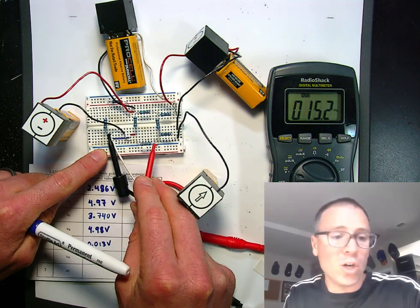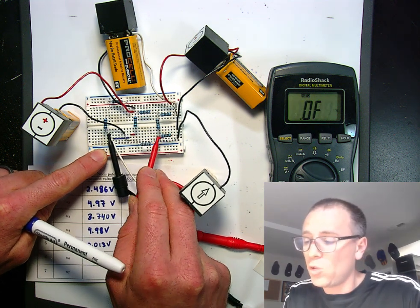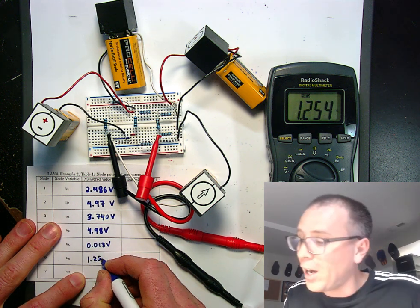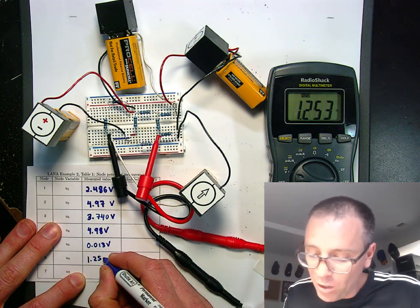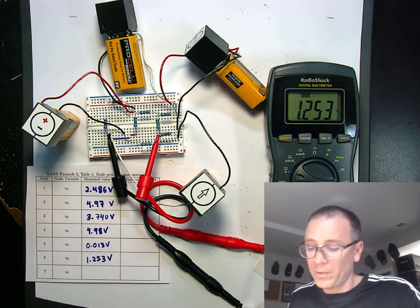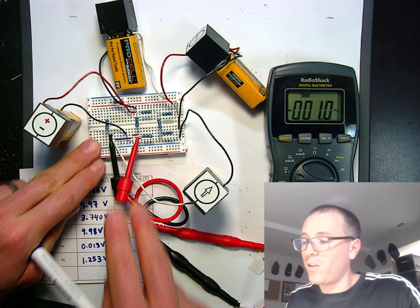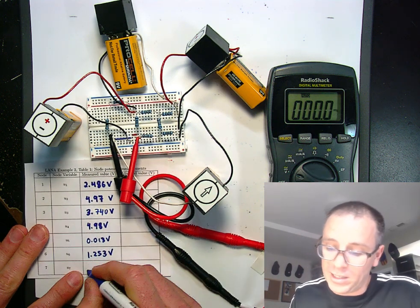And then we're going to go on to node 6, which is right in between. Node 6 looks like it's measuring 1.253, let's call it, volts. And then finally, we're going to go on to node 7, which indeed is zero volts.